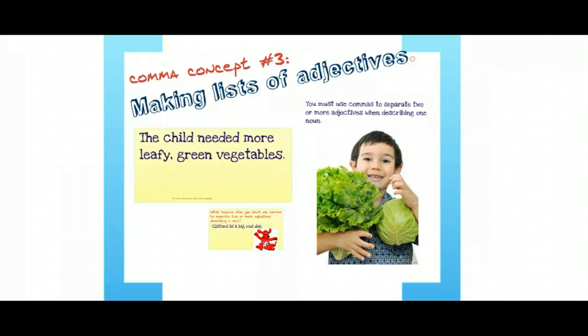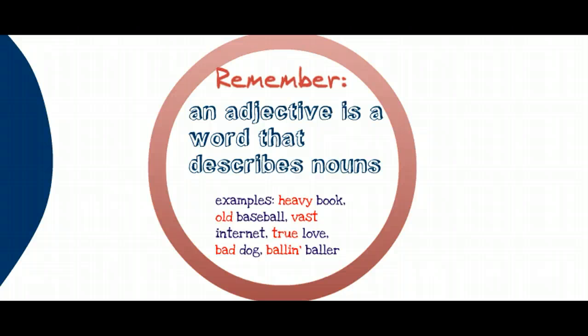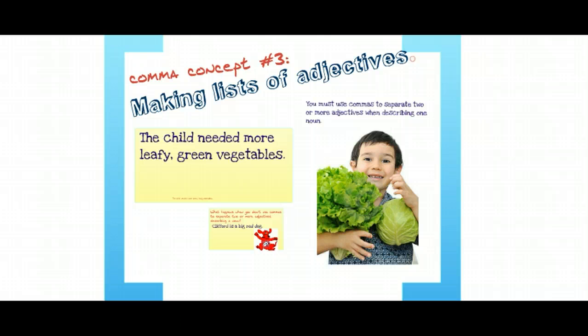Our third and final concept is how to make lists using adjectives, and this rule is slightly different than the previous two. An adjective is a word that describes nouns. Here's our list of nouns from the last slide, but with adjectives added to describe them. For example: a heavy book, an old baseball, vast internet, true love, a bad dog, or a ballin' baller. Adjectives describe nouns.